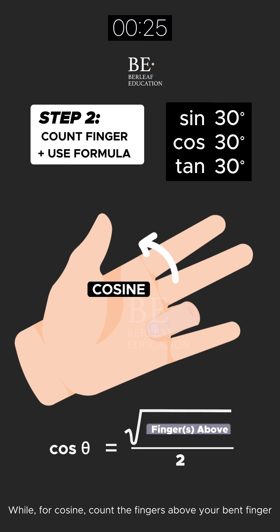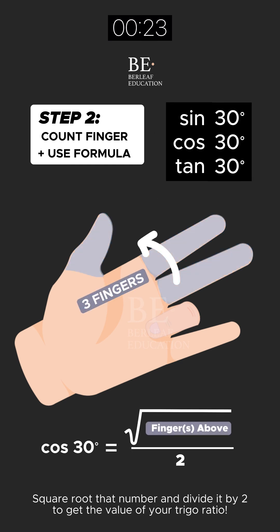While for cosine, count the fingers above your bent finger, square root that number and divide it by 2 to get the value of your trig ratio.